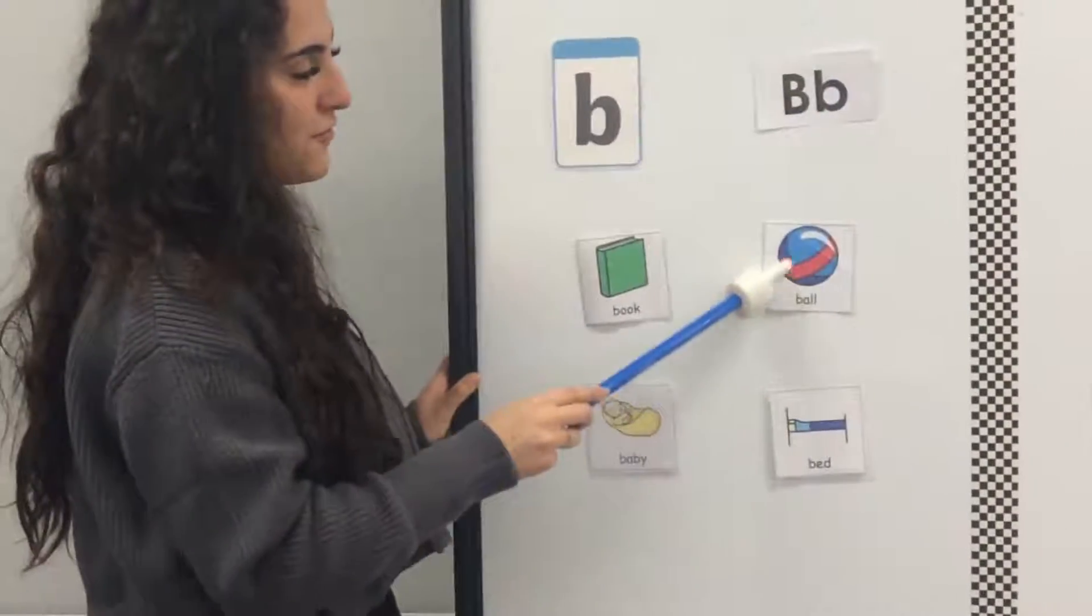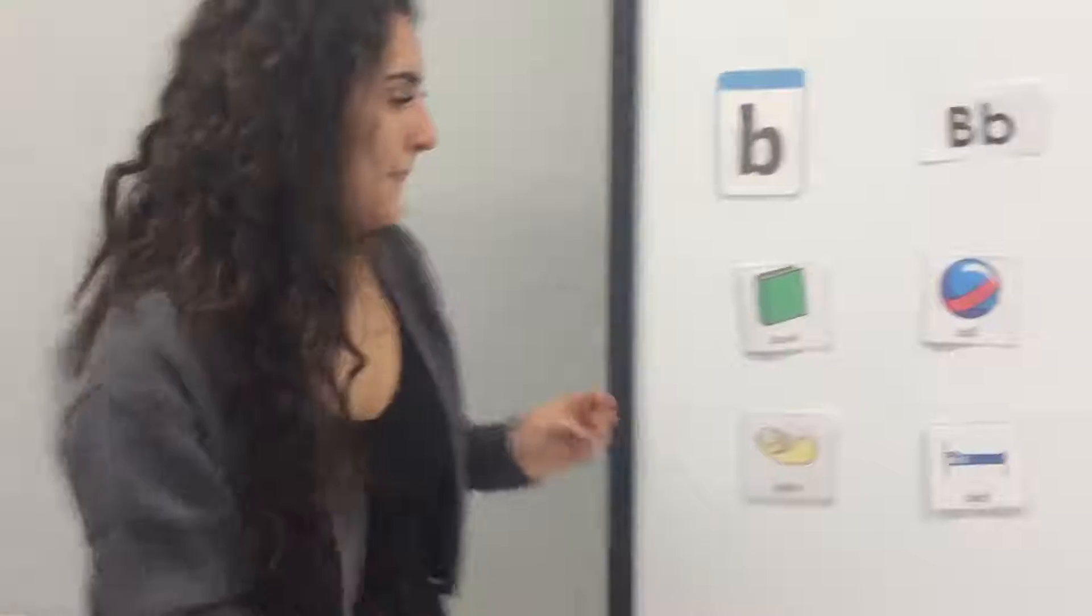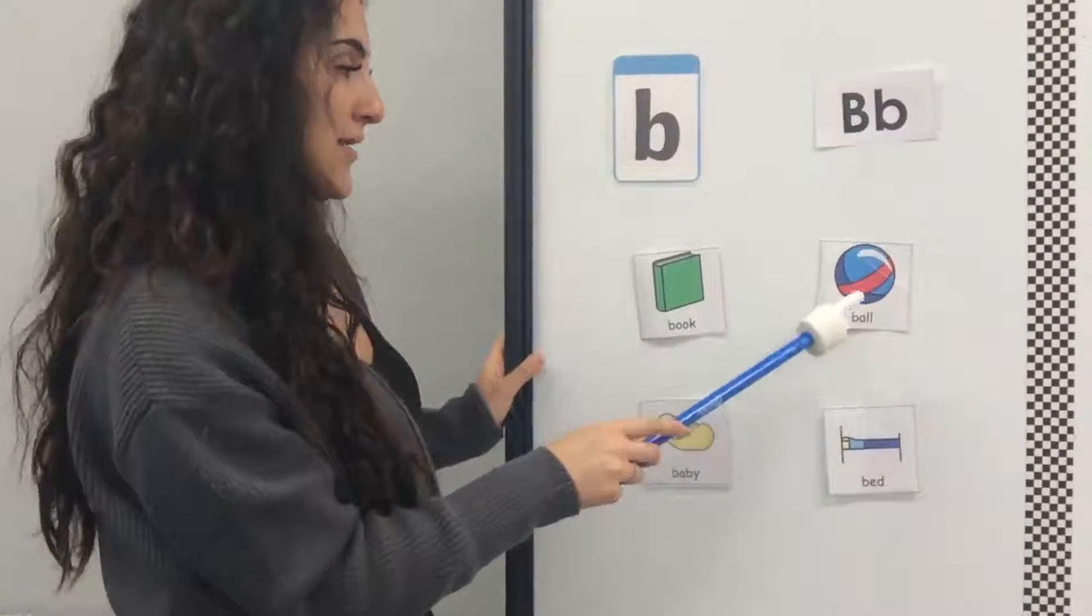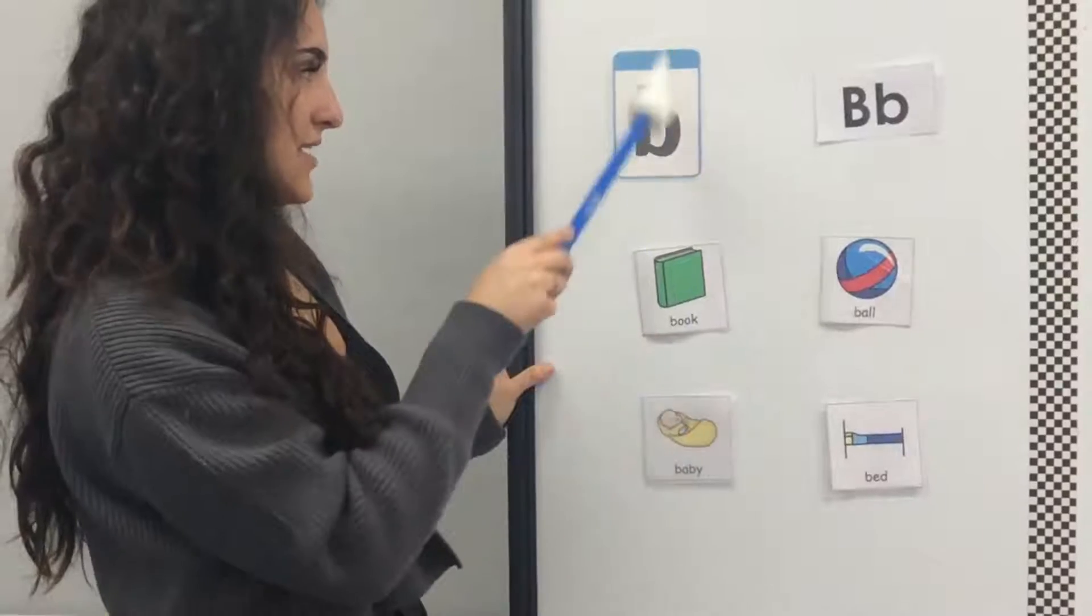Over here I've got B for ball. Let's all sign ball. And ball, I've got the picture and the word for ball. And ball also begins with the letter B.